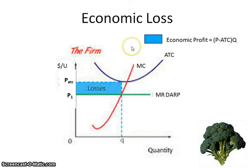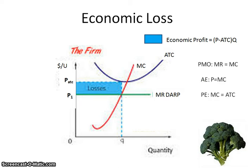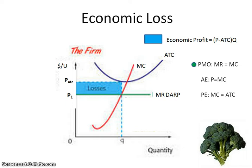One other thing we can do is review the different formulas we need to know. Looking at the different formulas we've been studying: our profit-maximizing output is where marginal revenue equals marginal cost — can you find that on the graph? Allocative efficiency is price equals marginal cost; this is producing the right mix of goods. Where are we going to find that one on the graph?